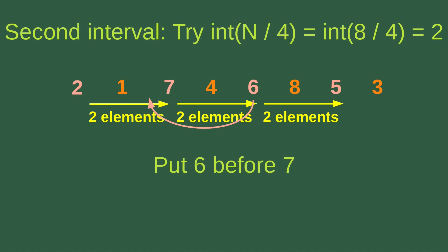We have 2, followed by 7 which is separated by 2 elements from 2. After 7, we have 6, which is separated by 2 elements from 7. And after 6, we have 5, which is separated by 2 elements from 6. So now we have 2, 7, 6, and 5 to sort, and again we can use insertion sort.